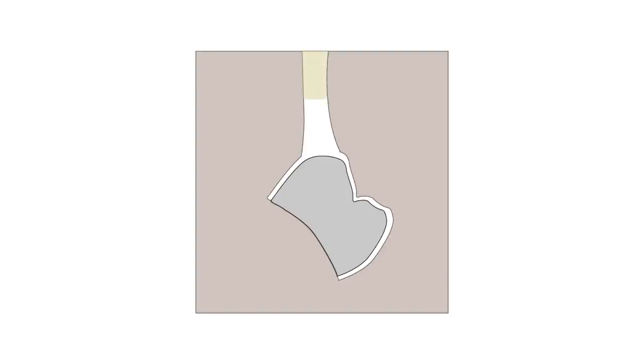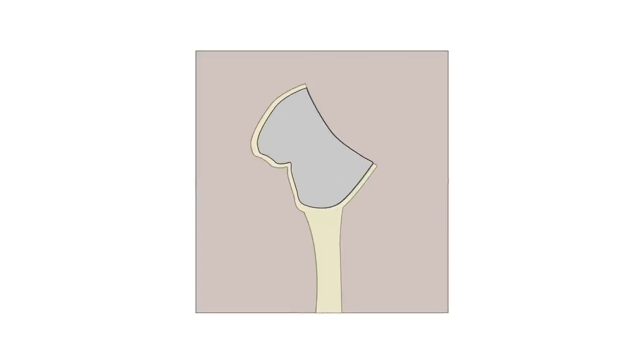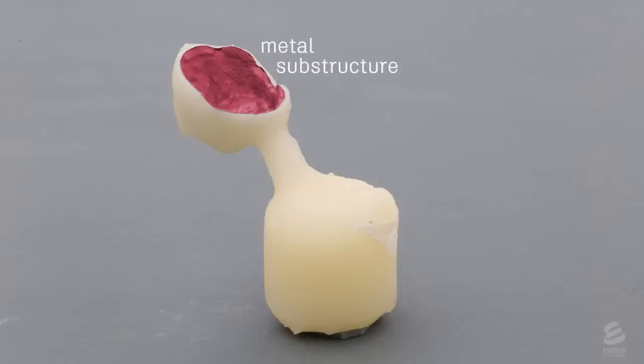A special ceramic is shot into the mold, filling the empty space. After cooling, the investment is removed. The metal substructure is now fused to the porcelain coating.